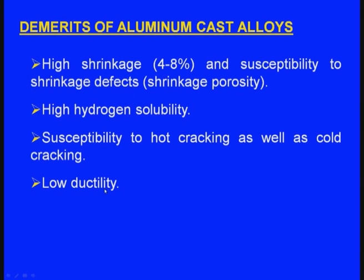During solidification this atomic hydrogen will become molecular hydrogen, and as the solidification is progressing, as the inter-atomic spaces are reducing, the molecular hydrogen cannot be accommodated inside. Thus it exerts pressure inside and that is how it results in cracking — this is the cold cracking. It has susceptibility to hot cracking as well as cold cracking, and it has low ductility. That is why pure aluminum may not be suitable for casting purposes, but we can alloy it — we can add different alloying elements and make it useful for casting purposes.